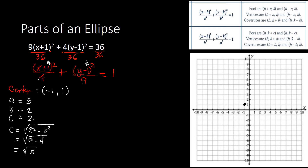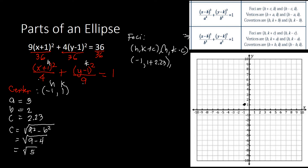Since the bigger denominator 9 is under the y term, the orientation is vertical. We use the vertical formulas. For foci: (h, k plus c) and (h, k minus c) — that is (negative 1, 1 plus 2.23) and (negative 1, 1 minus 2.23), giving foci at (negative 1, 3.23) and (negative 1, negative 1.23).